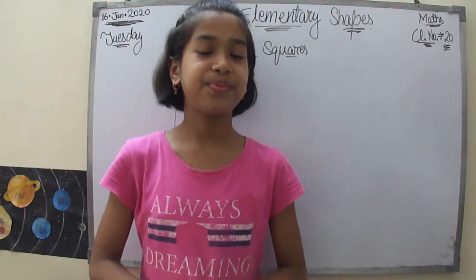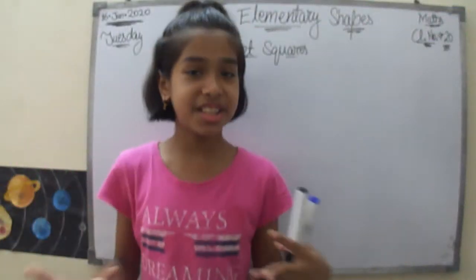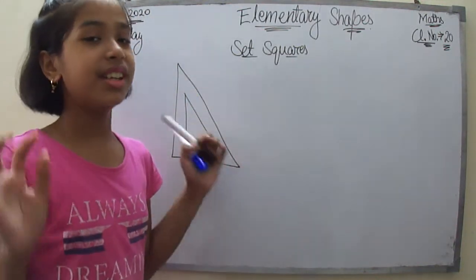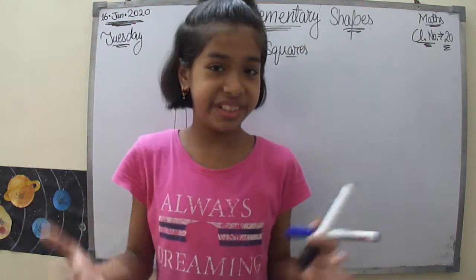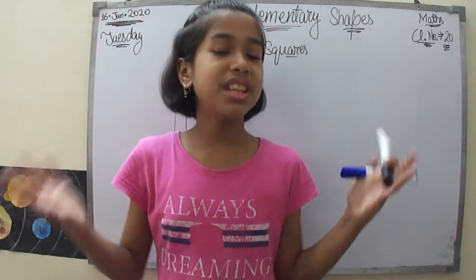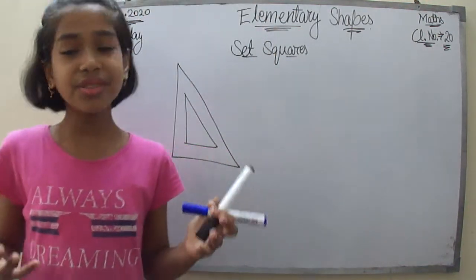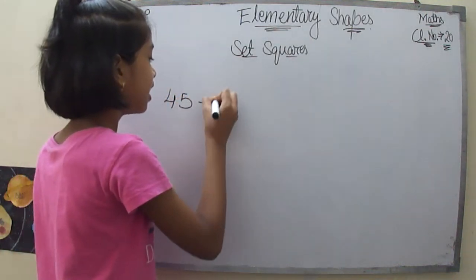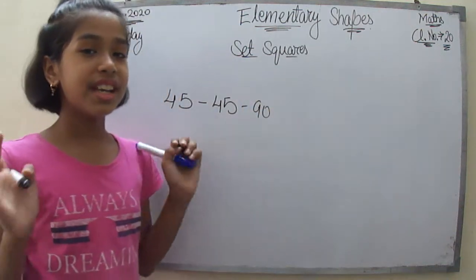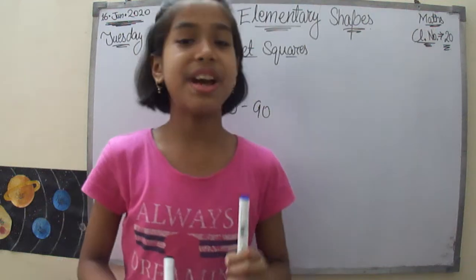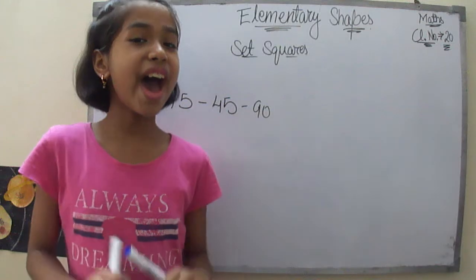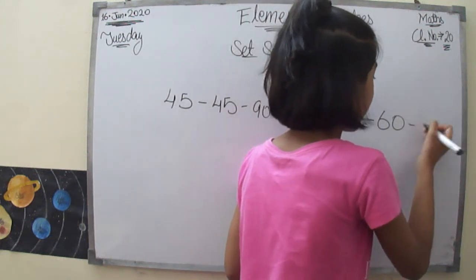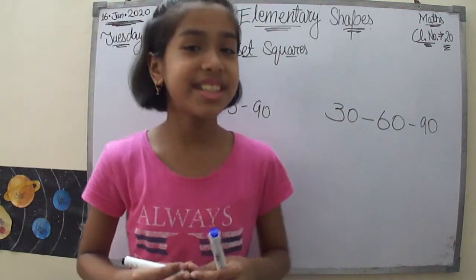Now let's move on. There are basically two set squares. One of the set squares has two 45-degree angles and one 90-degree angle. Hence, it is called the 45-45-90 set square. The other set square has 30, 60, and 90-degree angles. Hence, it is known as the 30-60-90 degree set square.